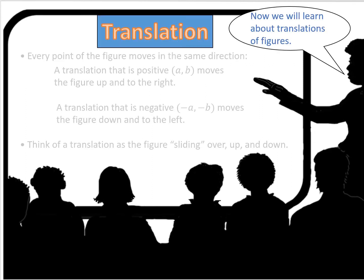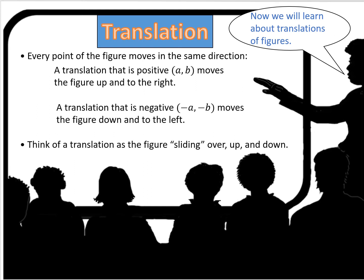Now we will learn about translations of figures. In a translation, every point of the figure moves in the same direction. A translation that is positive (A, B) moves the figure up and to the right. A translation that is negative (negative A, negative B) moves the figure down and to the left. Think of a translation as the figure sliding — over, up, and down, whichever direction. So it's a slide, whereas reflection is a flip.